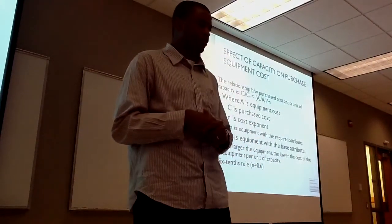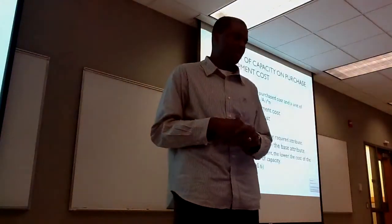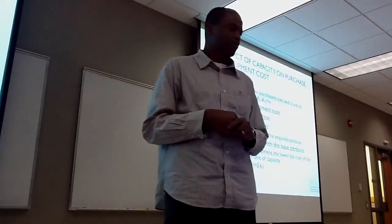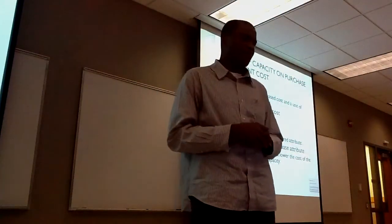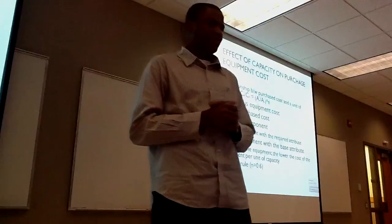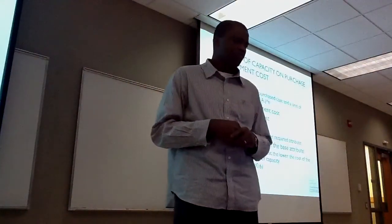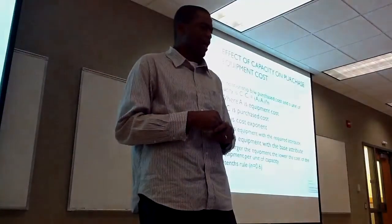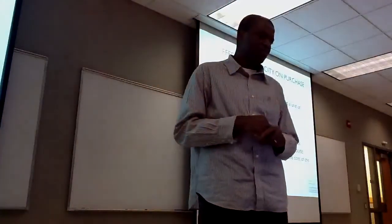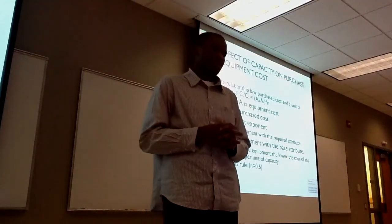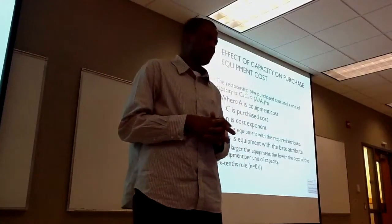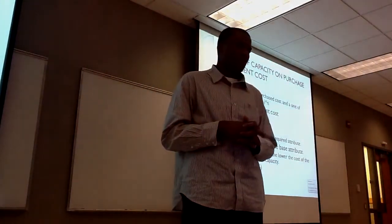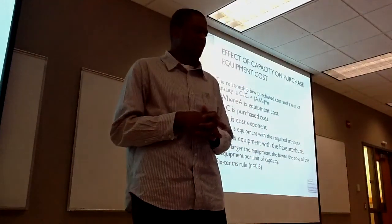The effect of capacity on purchased equipment cost is given by the relationship: C_A / C_B = (A_a / A_b)^N. Here, N represents the sixth-tenths rule, whereby N is replaced by 0.6. C is the purchased cost, A is the equipment capacity attribute, and N is the cost exponent. A refers to equipment with the required attribute and B to equipment with the base attribute.